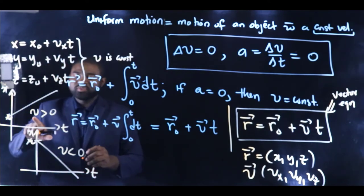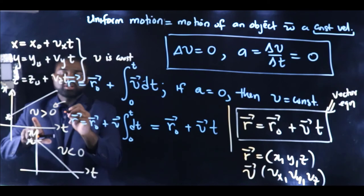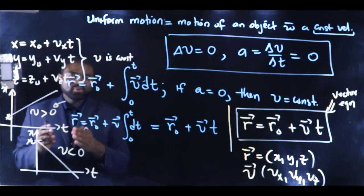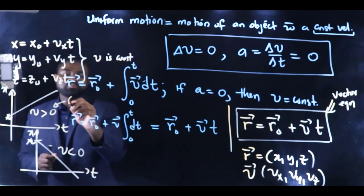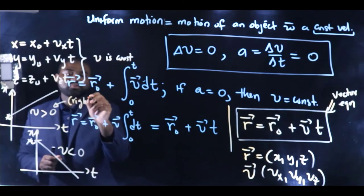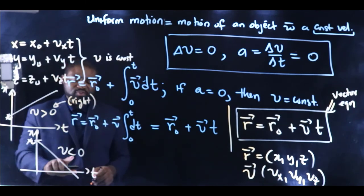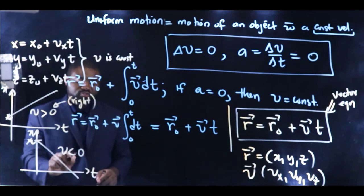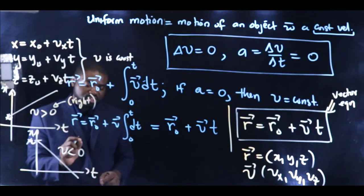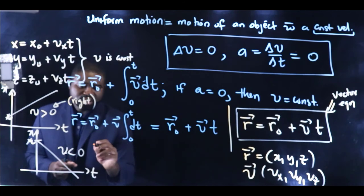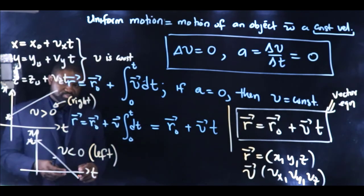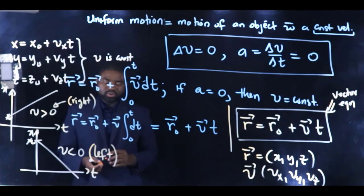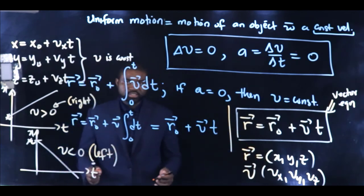If vₓ is less than zero, it means that the particle is moving in the direction of decreasing x. In other words, the particle is moving to the left.